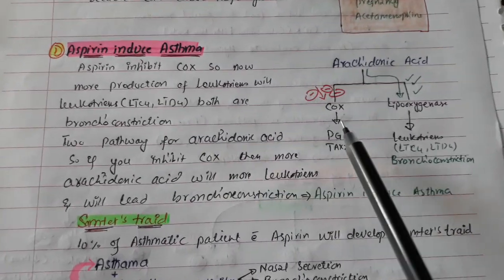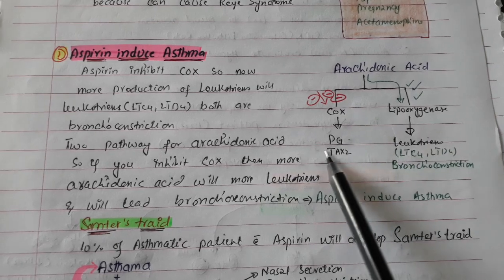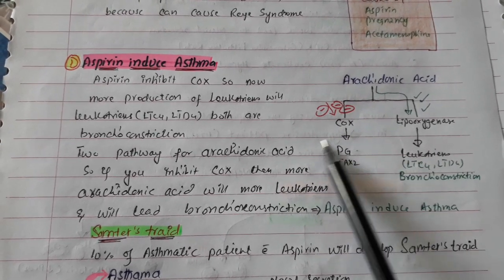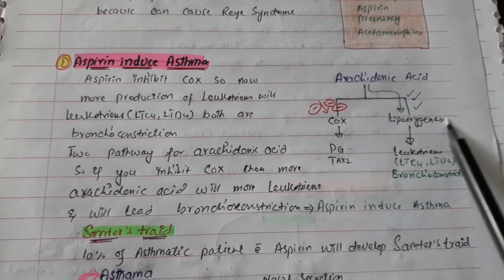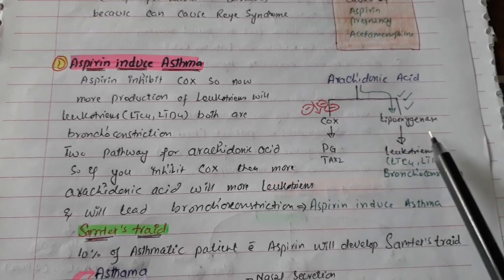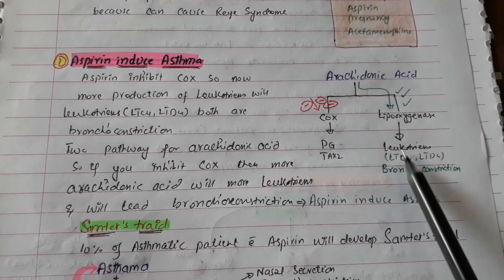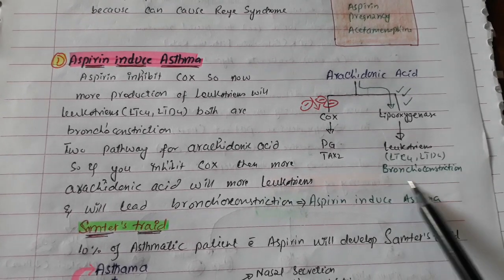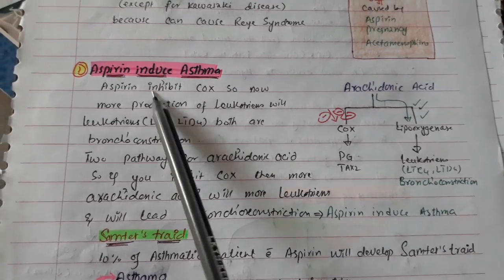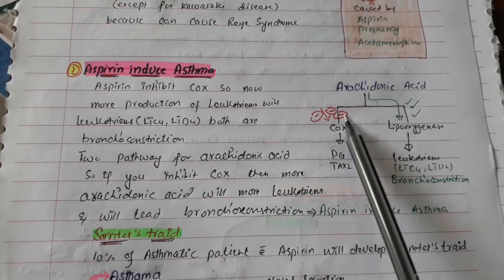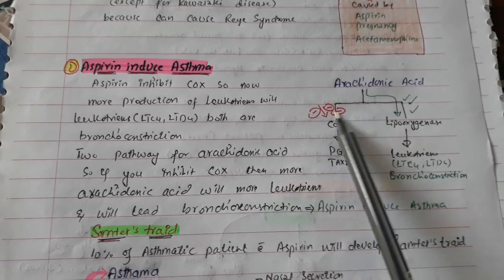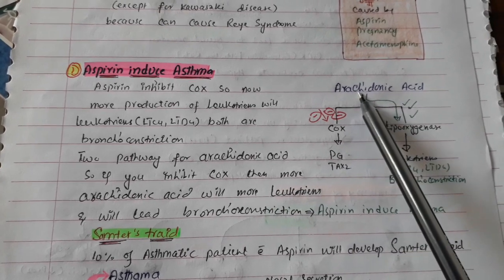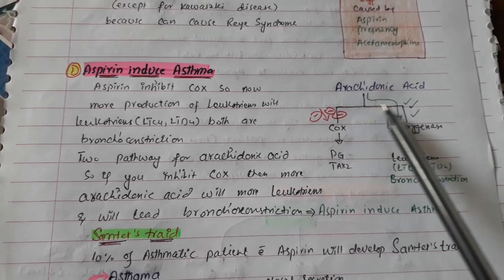Aspirin-induced asthma: arachidonic acid is converted by the COX enzyme into prostaglandins, but another pathway for arachidonic acid is the lipoxygenase pathway, which produces leukotrienes. These leukotrienes cause bronchoconstriction. Aspirin inhibits the COX enzyme, so arachidonic acid cannot form prostaglandins.